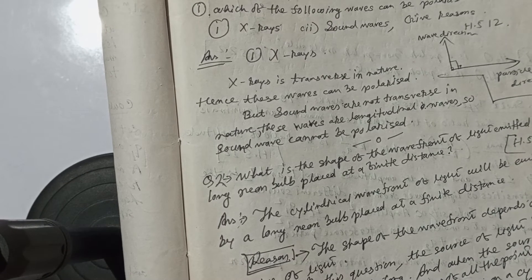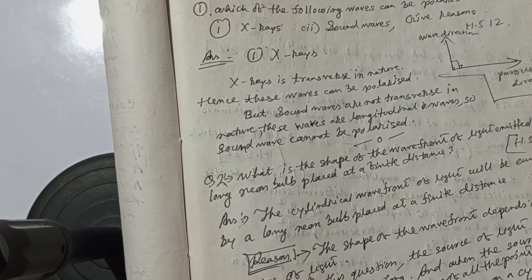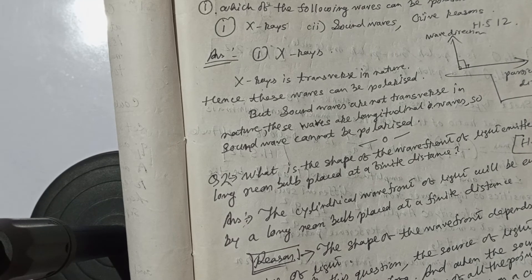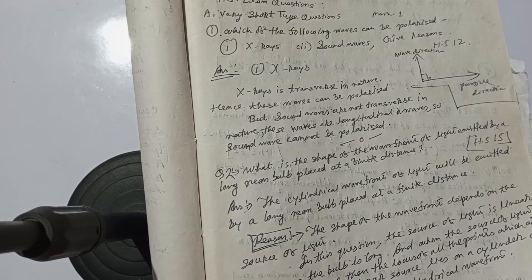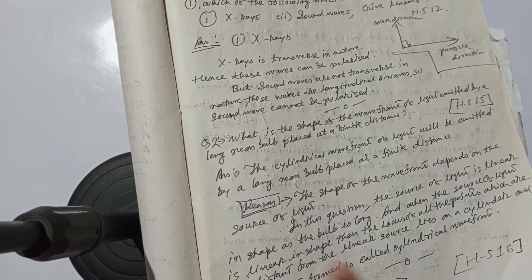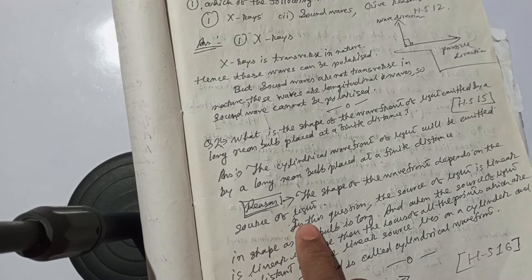The cylindrical wave front of light will be emitted by a long neon bulb placed at a finite distance. The reason is that the shape of the wave front depends on the source of light.